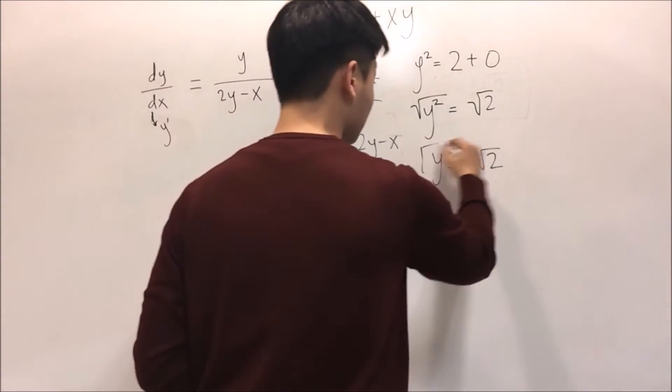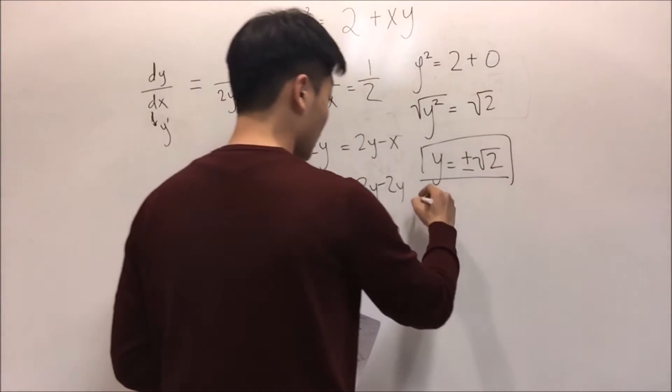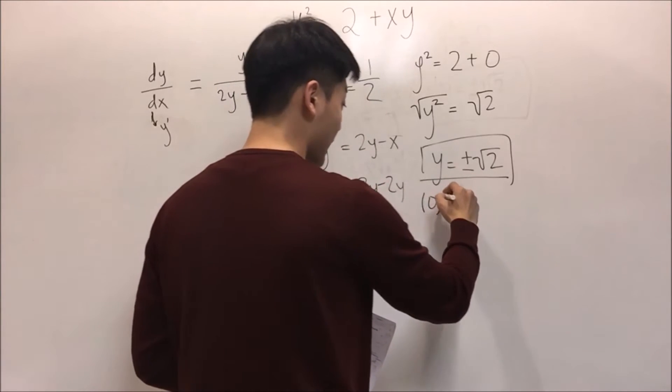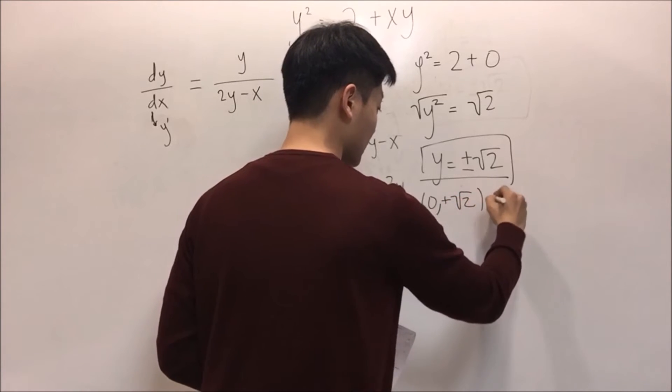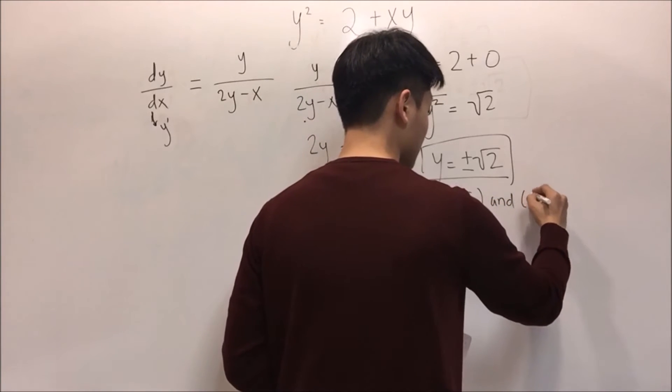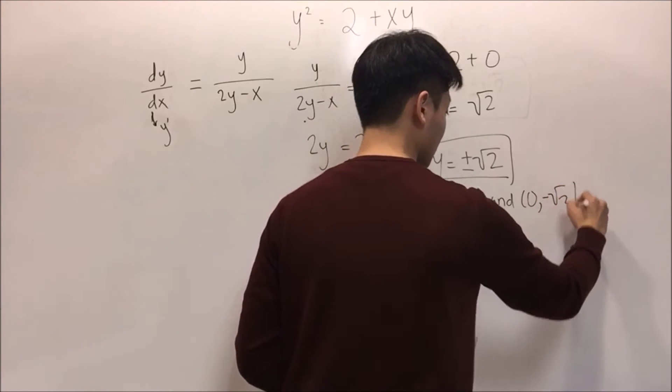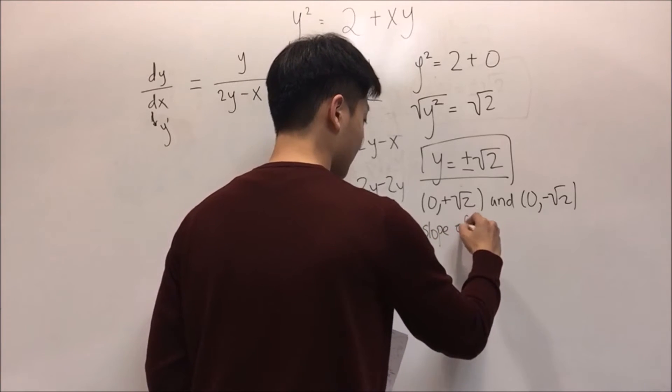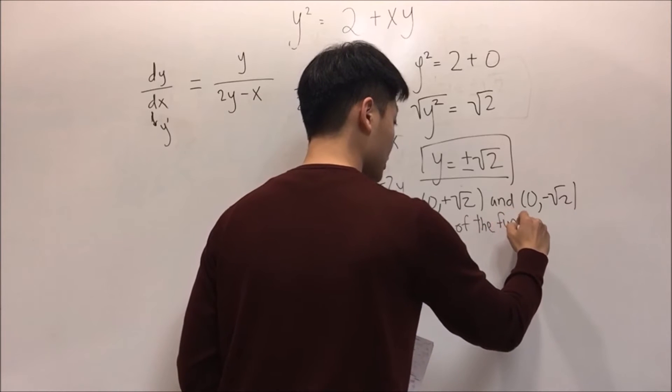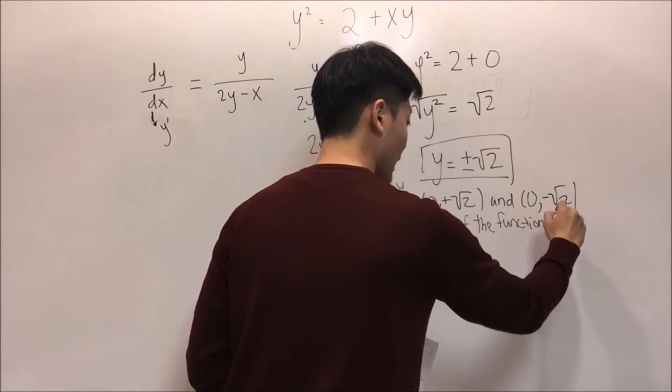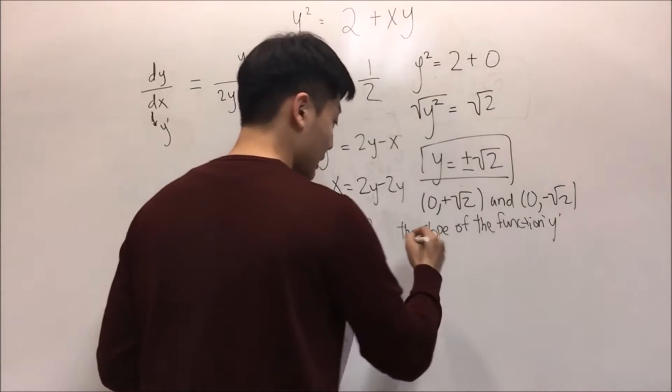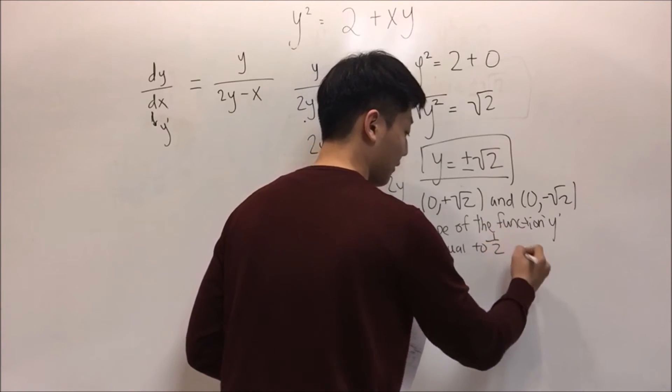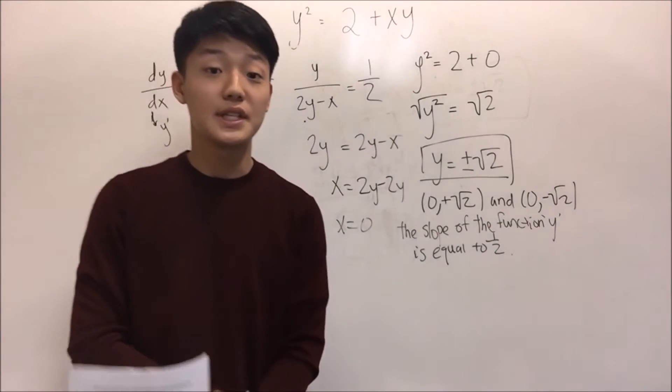That means to organize everything, when x equals zero and y equals plus radical 2, and 0 and minus radical 2, the slope of the function y, or f of x, is equal to one-half. This is the answer for part B.